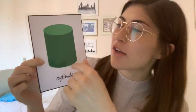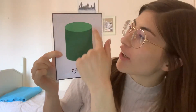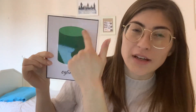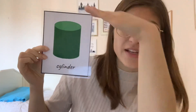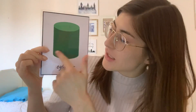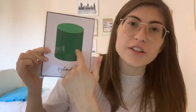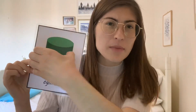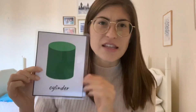You might notice a cylinder has a circle at the top that is flat, another circle at the bottom that is also flat, and the middle part is curved — it is round.